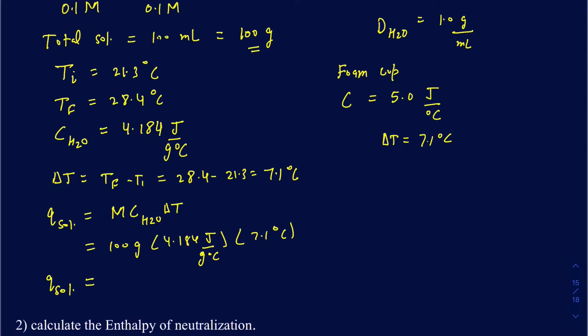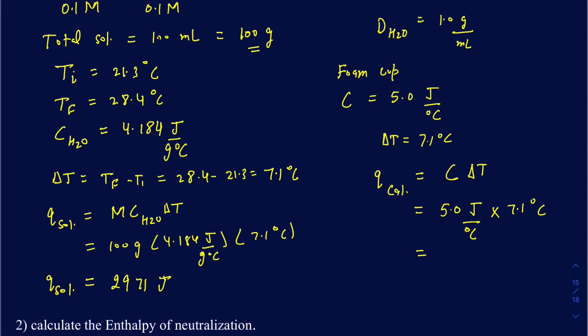Calculating Q of the solution: 100 times 4.184 times 7.1 equals 2,971 joules — that's the heat absorbed by the solution. Then Q of the calorimeter equals the heat capacity of the calorimeter times delta T: 5.0 joules per degree Celsius times 7.1 degrees Celsius equals 35.5 joules.